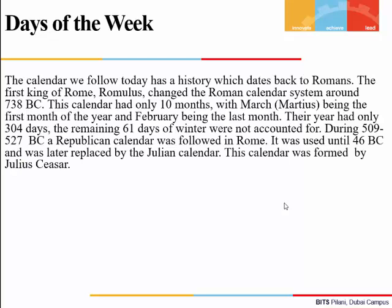Romans followed a particular calendar. It was changed in 738 BC by Romulus. At that time the calendar had only 10 months — the year started with March and the last month was February, giving only 304 days. This left 61 days unaccounted for, since ideally a year has 365 days.